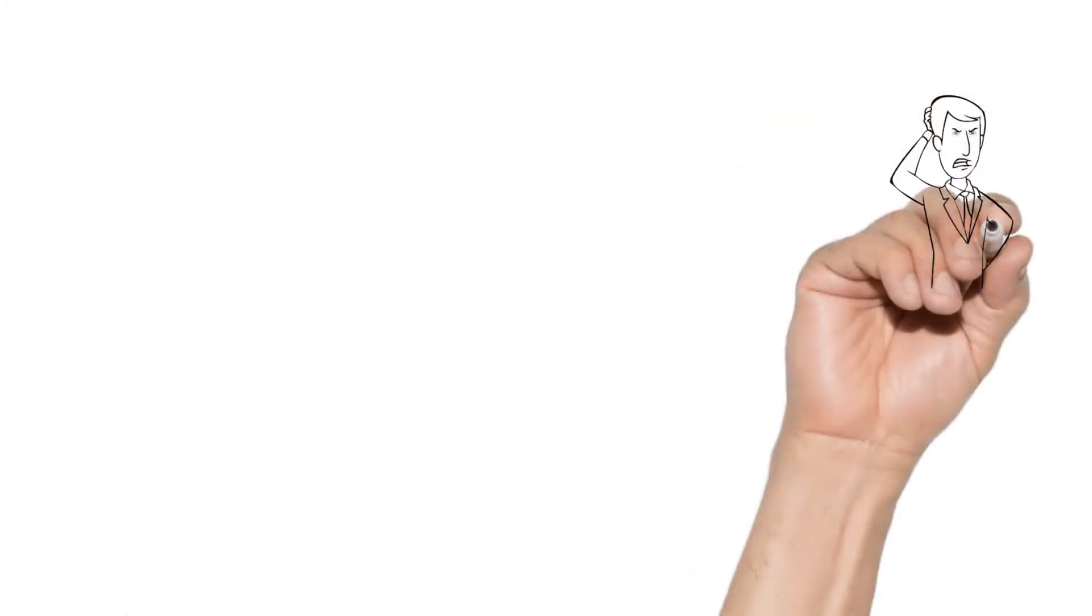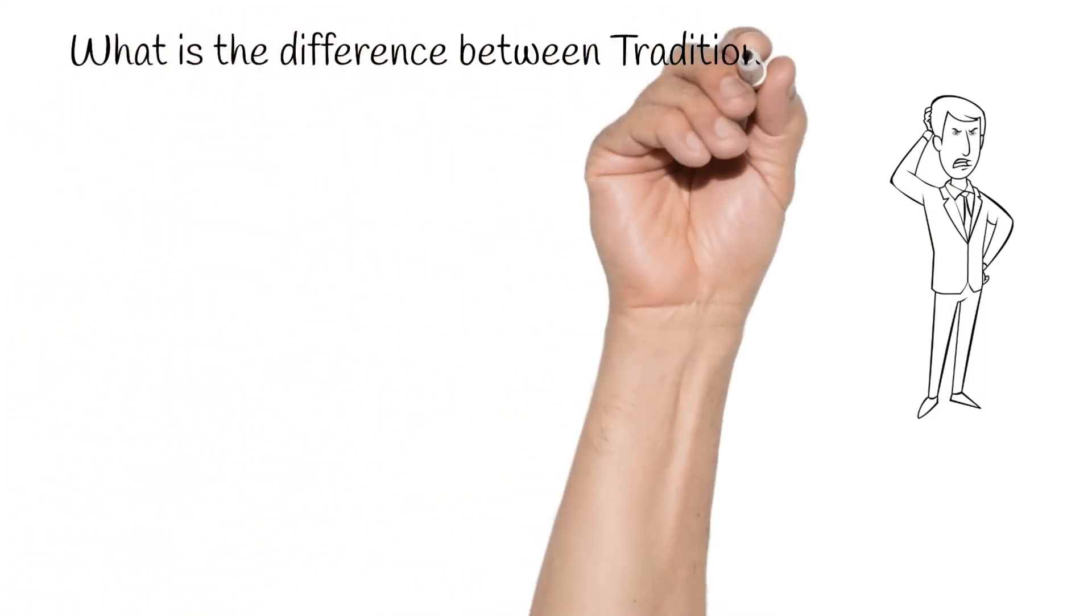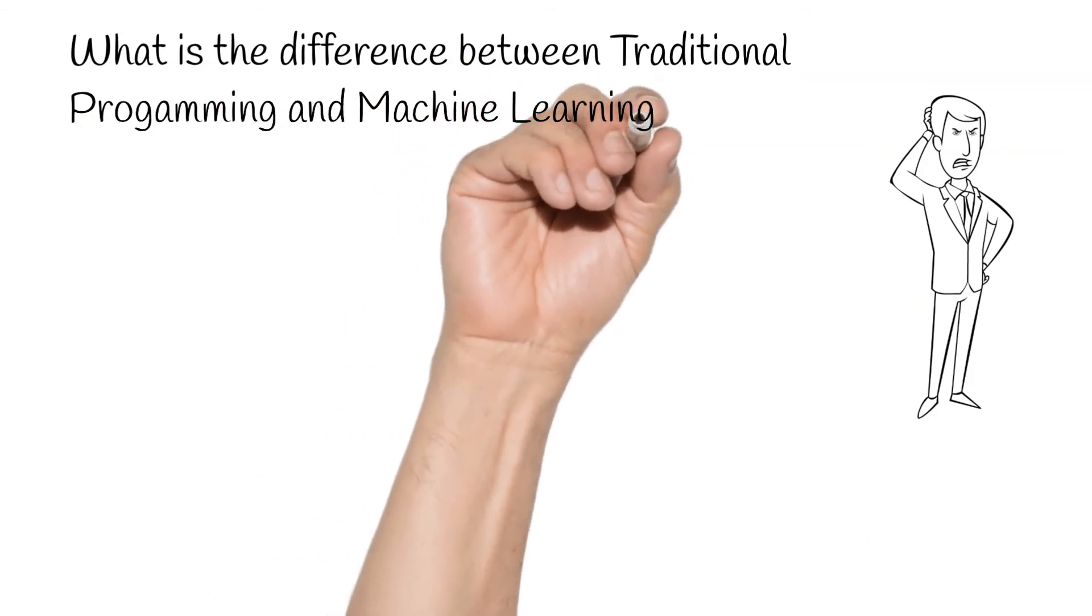What is the difference between traditional programming and machine learning? Well, in traditional programming, a person codes the logic or rules of the program. For example, he or she will define the rules to add two numbers. Based on the rules, the computer or machine will perform addition.